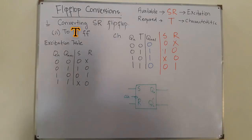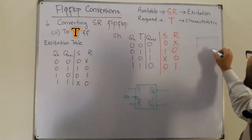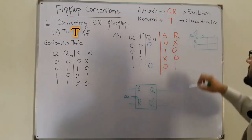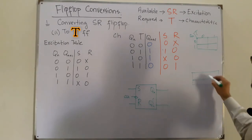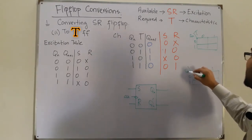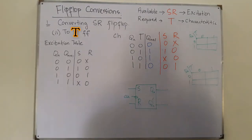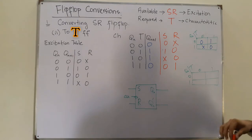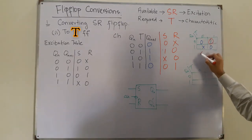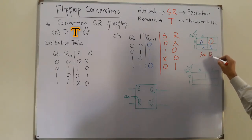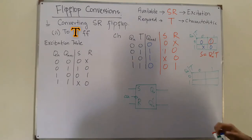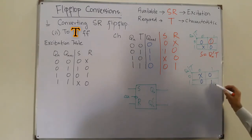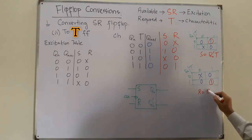Now by K-map we simplify for S and R. This is a four-cell map with inputs Qn and T. Filling in the S values: 0, 1, X, 0 — there is only a single one, so S = Qn_complement AND T. For R, filling in: X, 0, 0, 1 — giving R = Qn AND T.